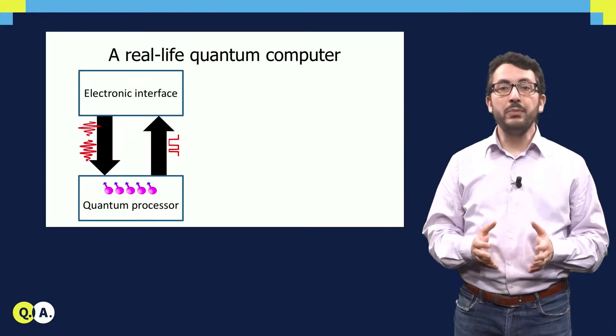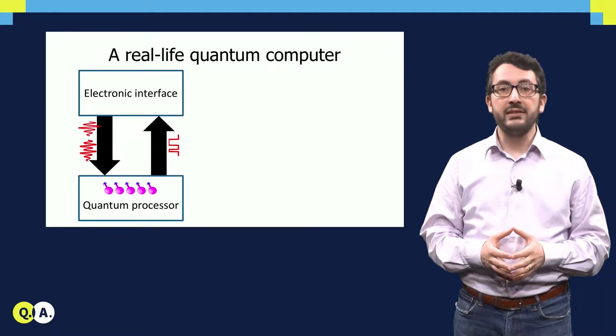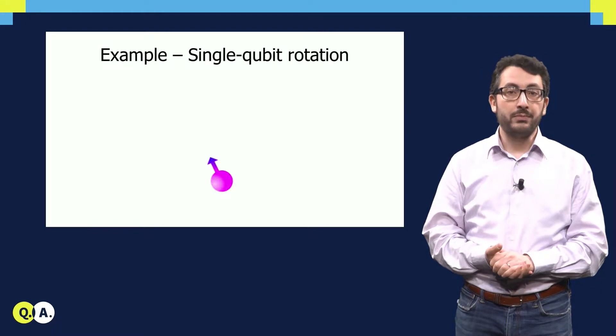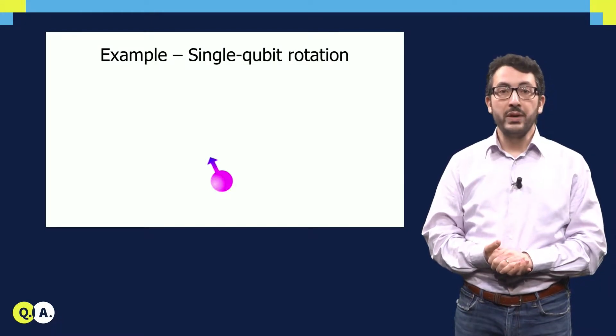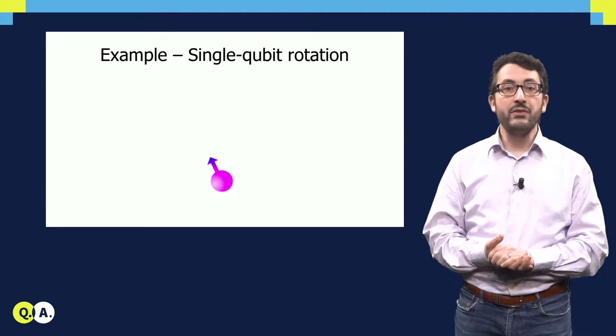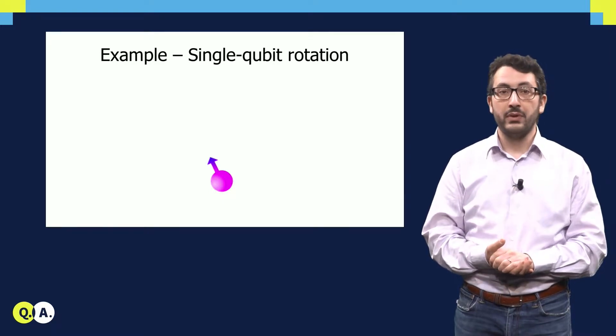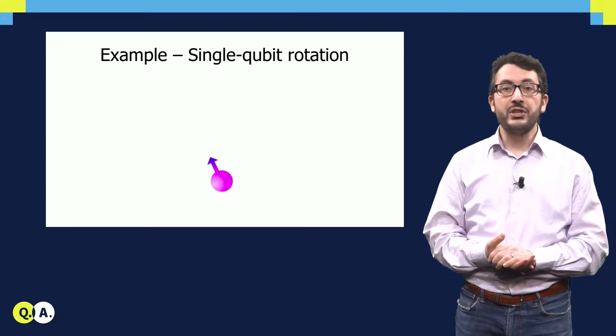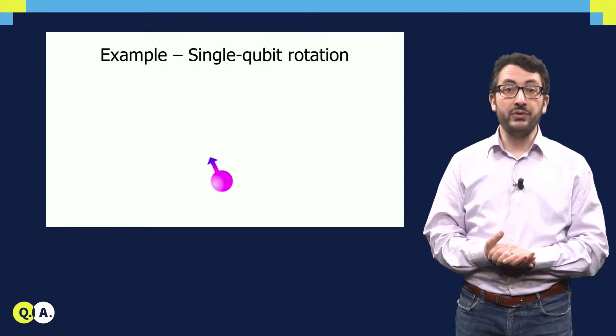In order to be a little bit clearer about what this entails, let's look at a number of examples. For example, let's assume we have a qubit implemented as a spin qubit using a single electron, and you would like to rotate this qubit.